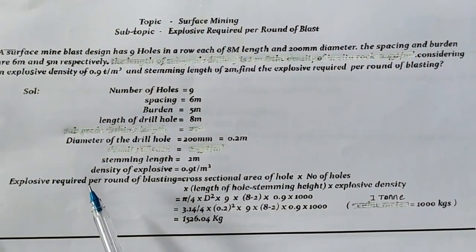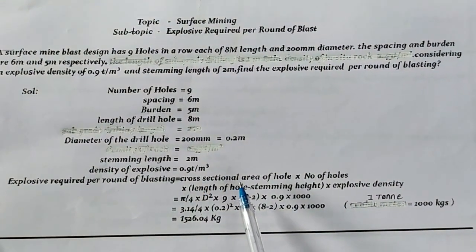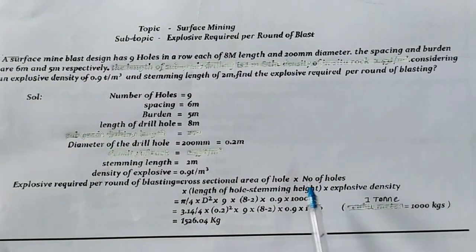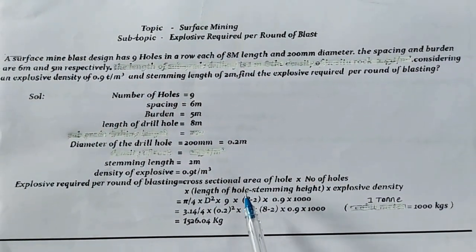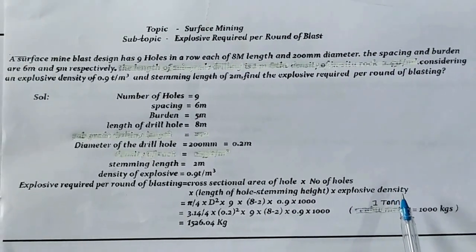Explosive required per round of blasting equals cross-sectional area of hole multiplied by number of holes, times length of hole minus stemming height, times explosive density.